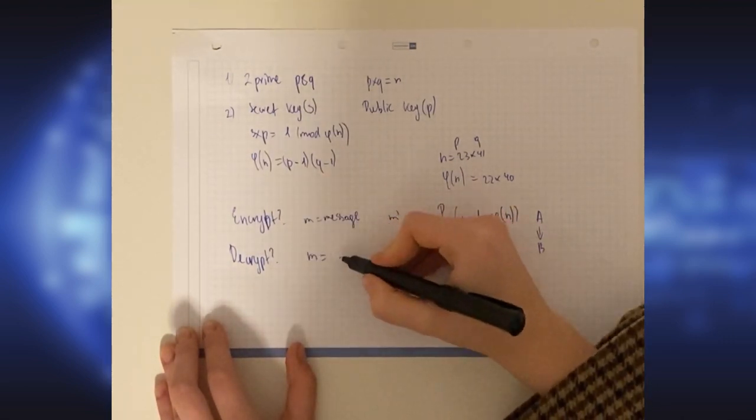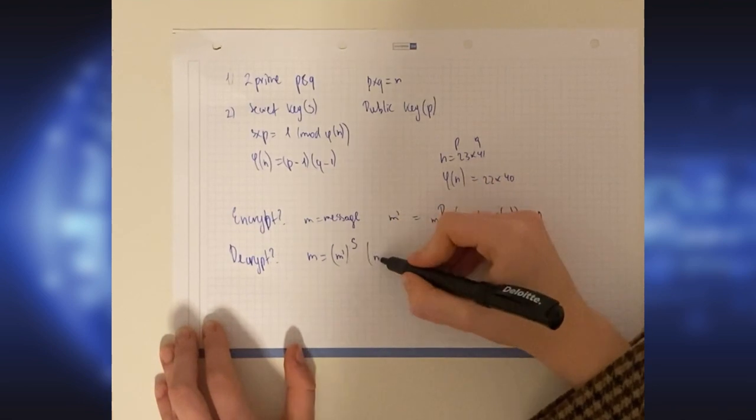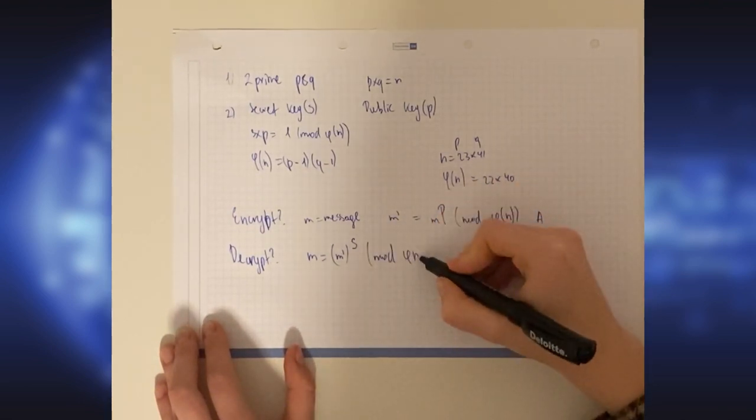To decipher, M equals M prime to the power of S, our secret key, which only we know and can use, modulus N.